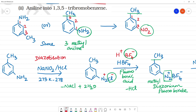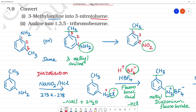First, the diazotization reaction — you can do fluoroboric acid, and you can change the CH3 group. If you put aniline in the first position, you place aniline in the first position.